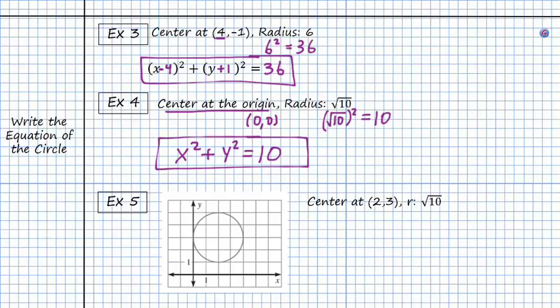And finally, for example number 5, we're given a circle that is outlined here, and we want to find the equation for that circle. So my center I find is at, looks like (2, 3). Yeah, that's what we have over here. Our center is at (2, 3).